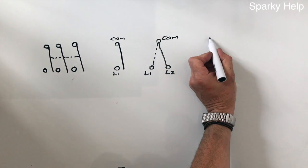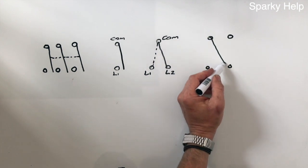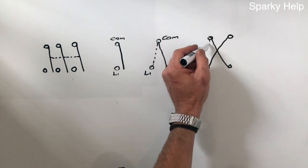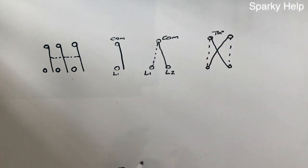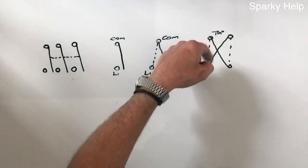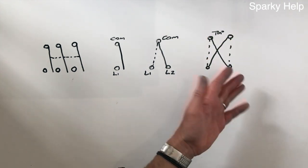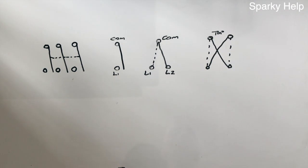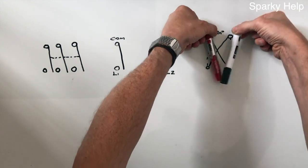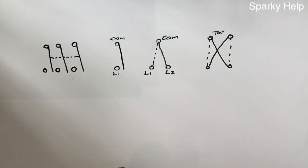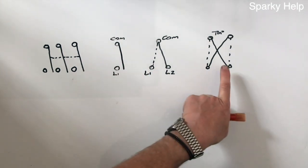Then there is an intermediate switch. These ones have different markings on the back — they might have L1, L2, L3, L4, or L1, L2 repeated, or nothing at all and just a drawing. How these basically work: they operate in one position connecting one way, and in the other position connecting the other way. So you have a one-way, a two-way, and an intermediate.